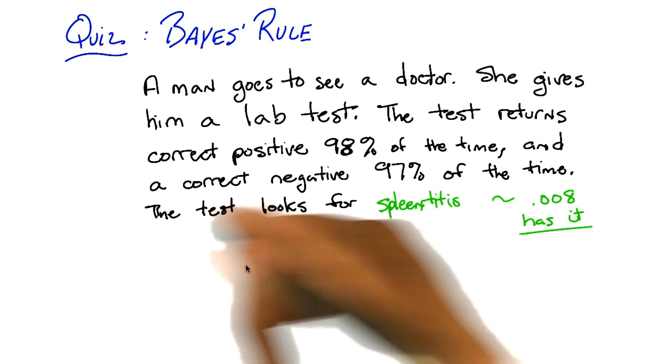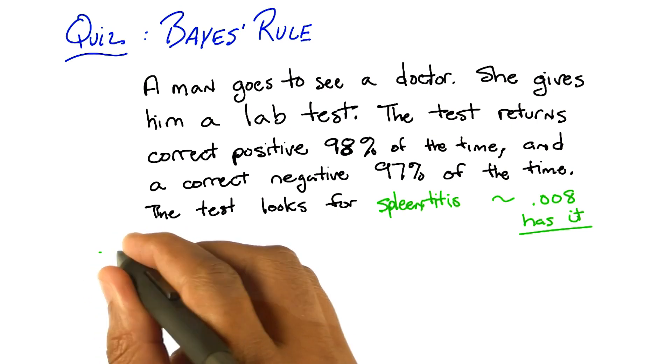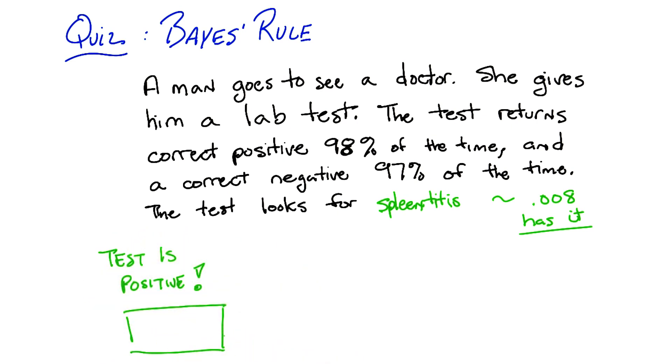Oh. Yes. So, test is positive. So here is the quiz question. Should we be notifying his next of kin? Does he have spleen titus? I thought you just said he has spleen titus. No, I said the test says he has spleen titus. Or the test looks for spleen titus, and the test came back positive. So, does he have spleen titus, yes or no?